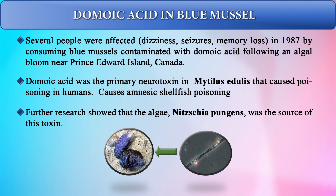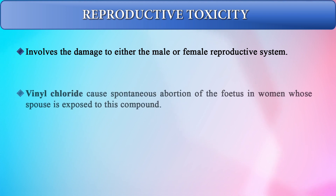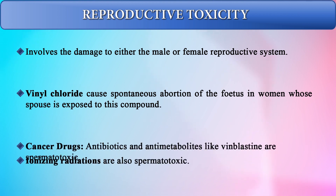Reproductive toxicity involves damage to either the male or female reproductive system. Vinyl chloride can cause spontaneous abortion in the fetus of an exposed spouse. Cancer drugs can cause the same problem, and ionizing radiations are also spermato-toxic.